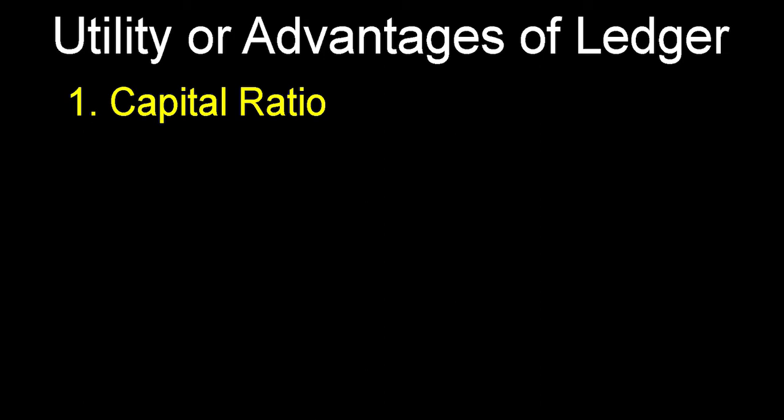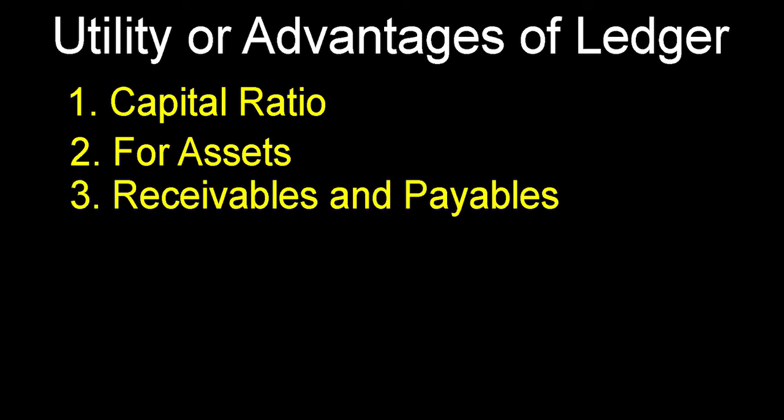Now the important utilities or advantages of ledger. First, to know the capital ratio: with the help of the ledger book, the owner has an idea about how much capital is employed or invested in the business. Second, for assets: various types of assets we have, so the net value of assets — like fixed assets, current assets, or fixed year's assets — can be known with the help of the ledger. Third, receivable and payable: it gives information about how much is receivable and payable at the end of the year in a business.